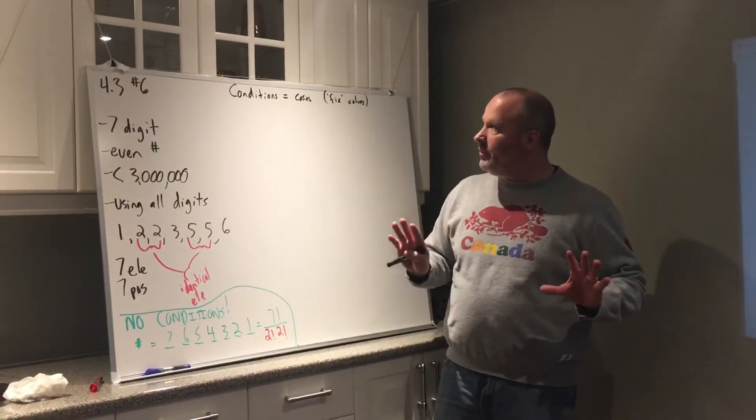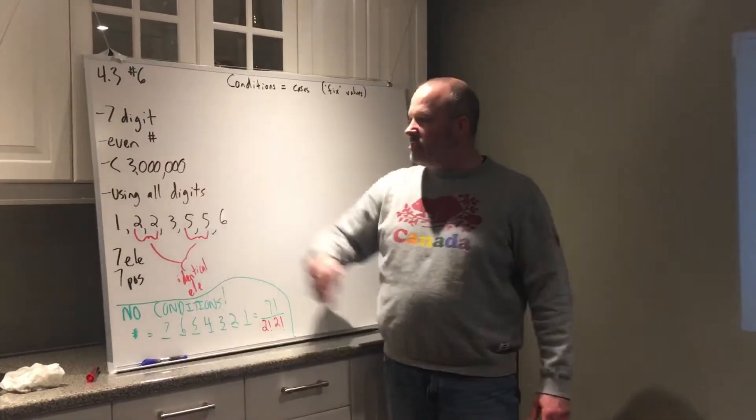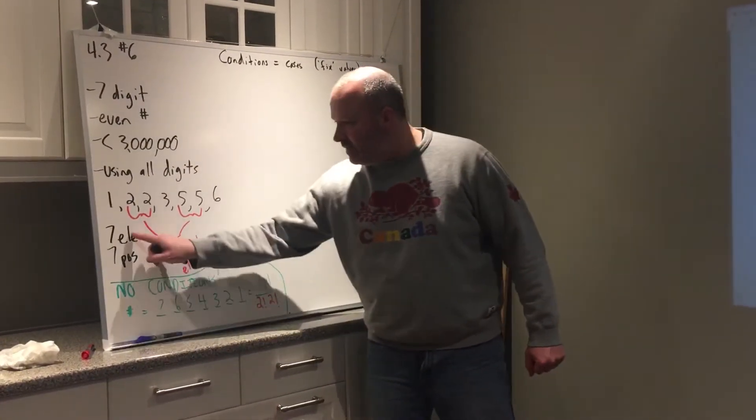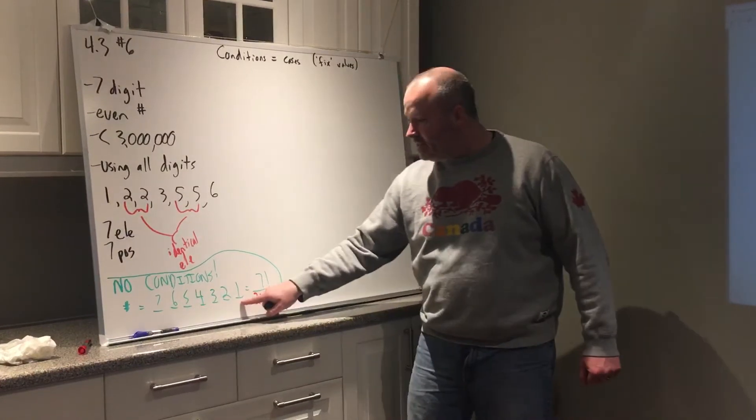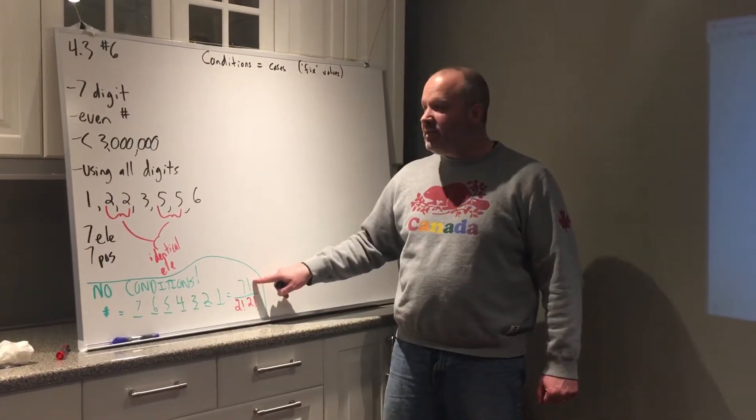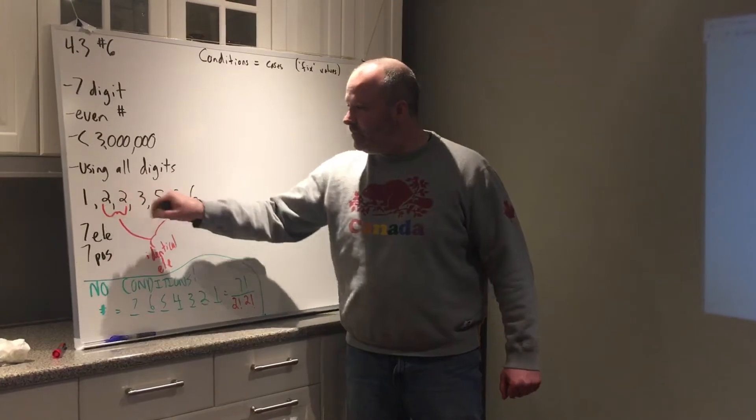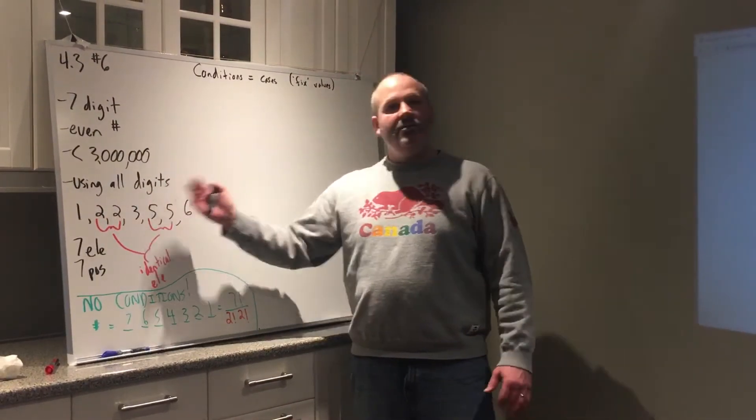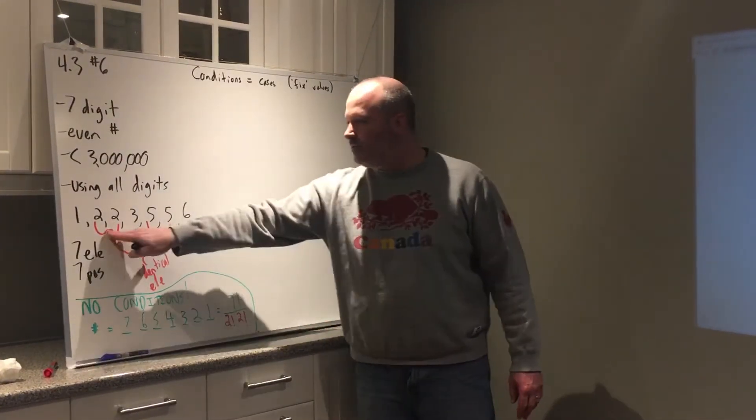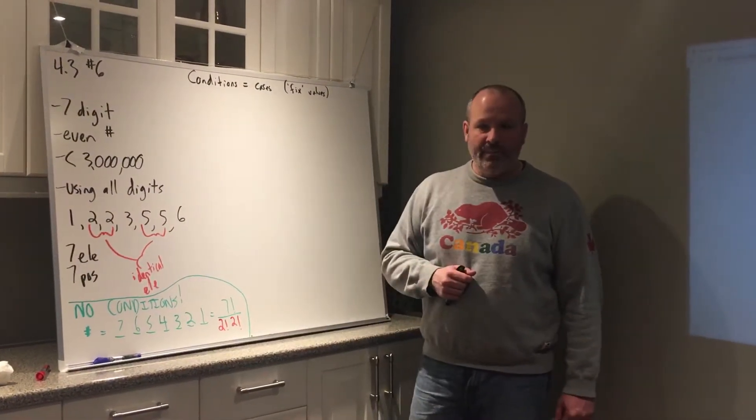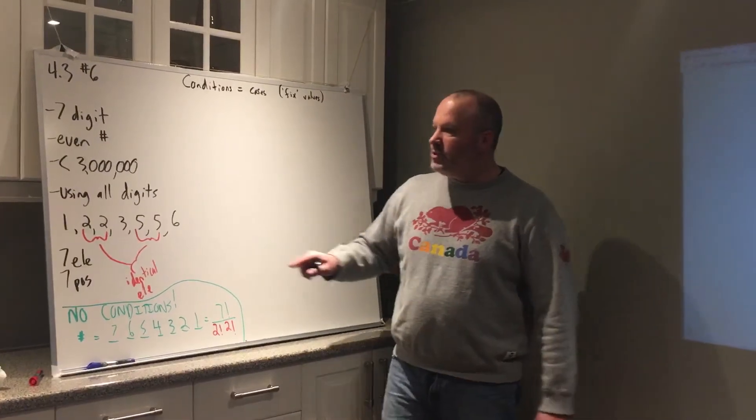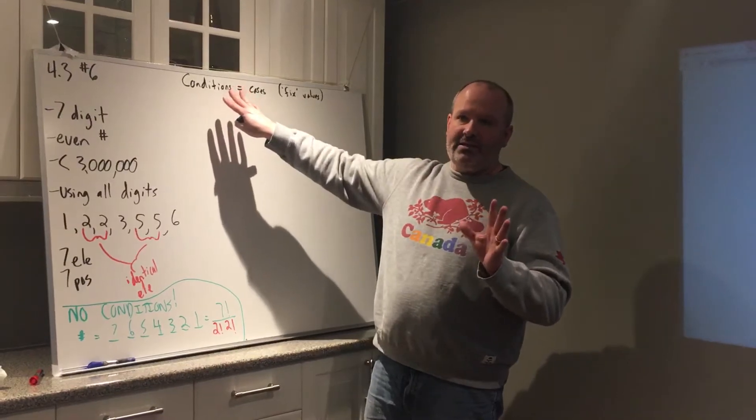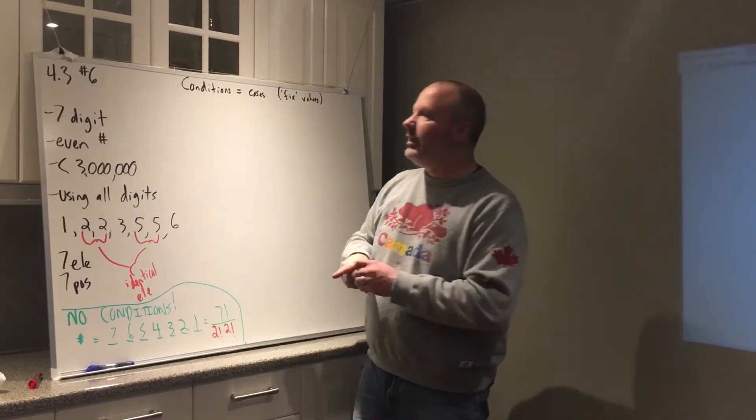If we were just to keep this simple and not worry about the even and the less than 3 million, with no conditions, it would be seven elements, seven positions, but it wouldn't be seven factorial. We'd give you seven factorial, and then because these two elements are identical and these two elements are identical, you lose the variability. So you lose two factorial here and two factorial here. But once you start adding even and less than 3 million, it makes sense to break it up into cases.